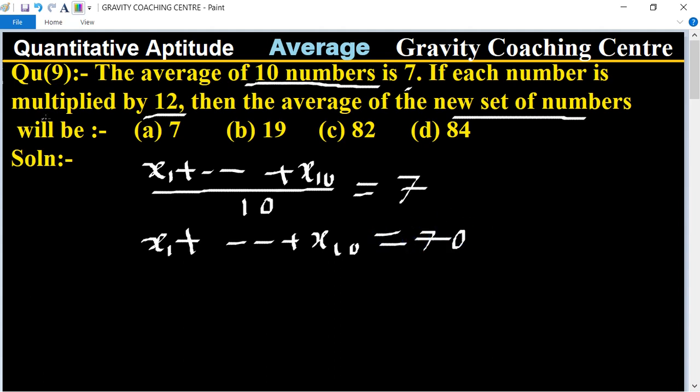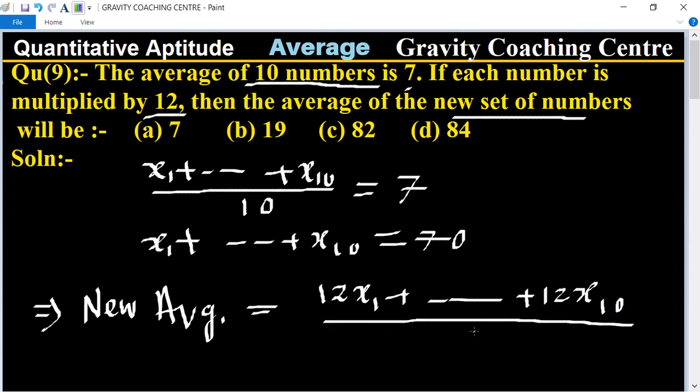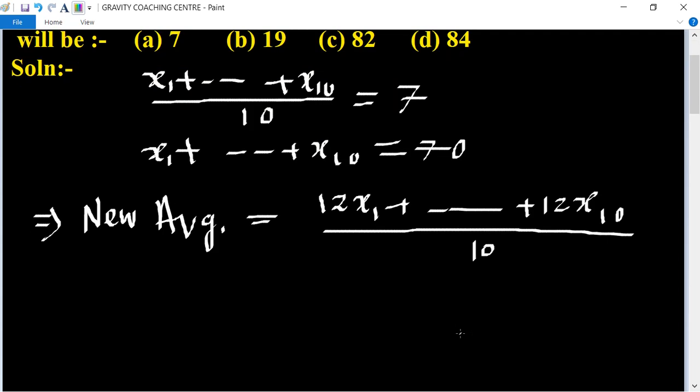If 12 is multiplied with all the numbers, the new average equals (12x₁ + 12x₂ + 12x₃ + ... + 12x₁₀) / 10.